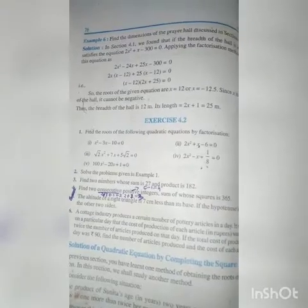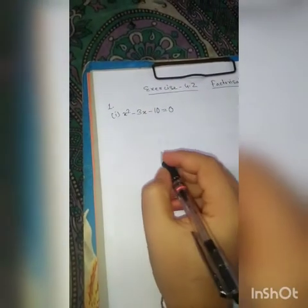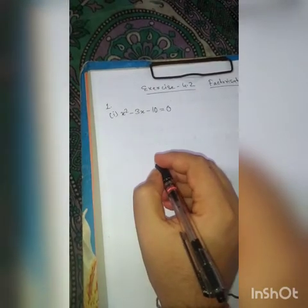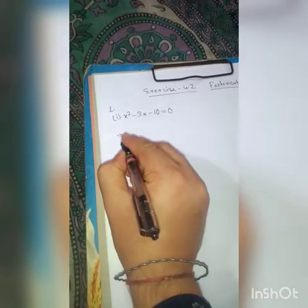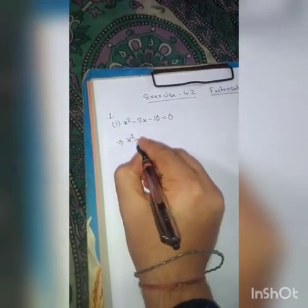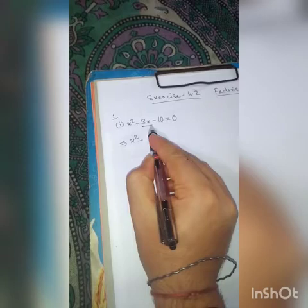Dear students, today we are going to do Class 10 Exercise 4.2, Question Number 1. This is the question, and we have to solve it by the factorization method. In factorization method, we start with x squared minus 3x. You have to consider the coefficient of x squared, which is 1.